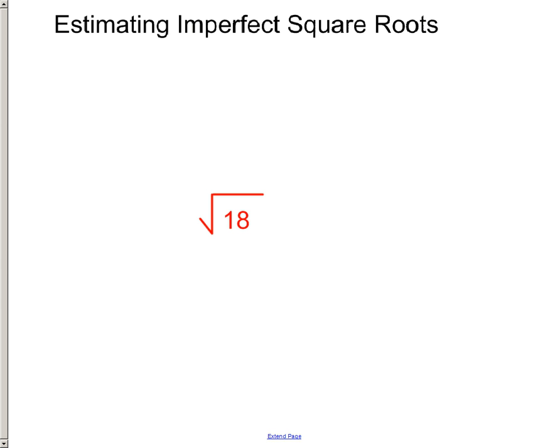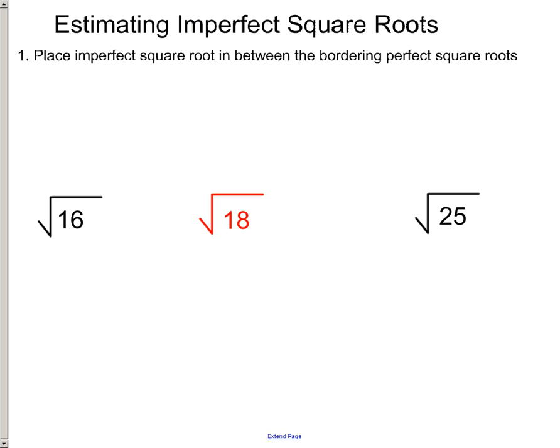Square root of 18, it's an imperfect square root. So the first thing is, let's find the two perfect square roots. A little bit below it would be 16, because that's 4, and the high side would be square root of 25 because that's 5.